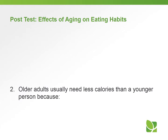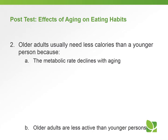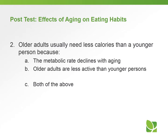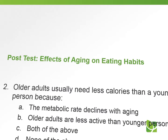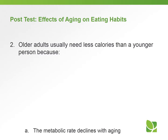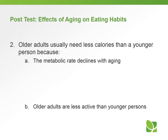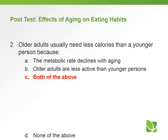Question number two: older adults usually need less calories than a younger person because A, the metabolic rate declines with aging; B, older adults are less active than younger persons; C, both of the above; or D, none of the above. The answer is C — both of the above. The metabolic rate does decline with aging, and older adults are less active than younger people.